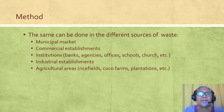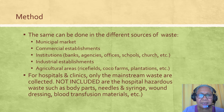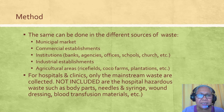The same procedure can be done for different sources of waste: the municipal market, commercial establishments, institutions, industrial establishments, and agricultural areas. For hospitals and clinics, only the mainstream waste is collected. Hospital hazardous waste — such as body parts, needles and syringes, wound dressings, blood transfusion materials, and the like — are not included.